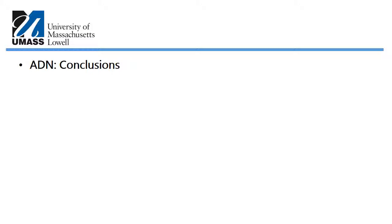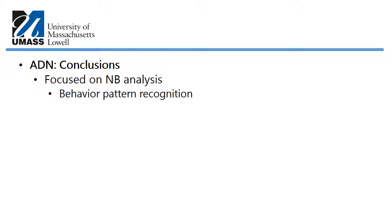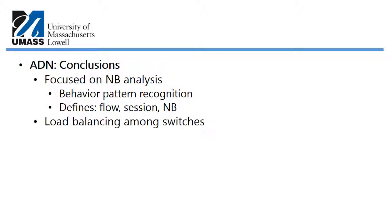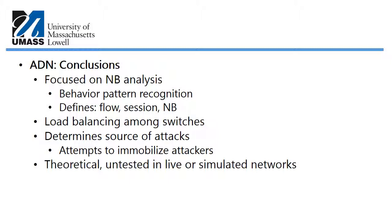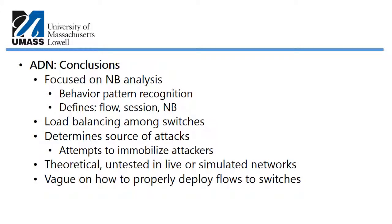I also looked at ADN — Auto-Defending Network. It is particularly interesting for network behavior analysis, focusing on behavior pattern recognition, and defining flows, sessions, and network behavior. It is also concerned with load balancing among switches, determining the source of attacks, and attempting to identify attackers. One drawback is that it appears theoretical at this point — it doesn't seem to be tested in live or simulated networks and is rather vague on how to properly deploy flows to switches.